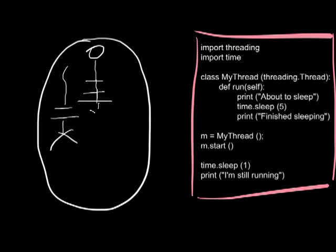So what's happened is we've created and started our thread using m.start. The start method is part of the thread class that we inherit from — threading.thread. It includes a default start, a default stop, and a default run. The default start begins execution of that individual thread, the stop ends it, and the run is what you need to override — you put the actual instructions inside run that will be executed by the thread.